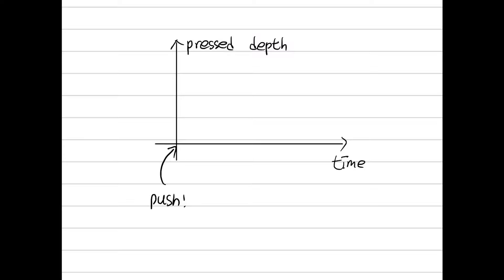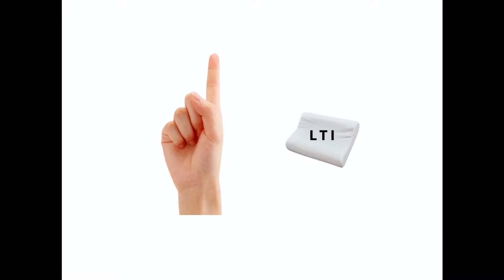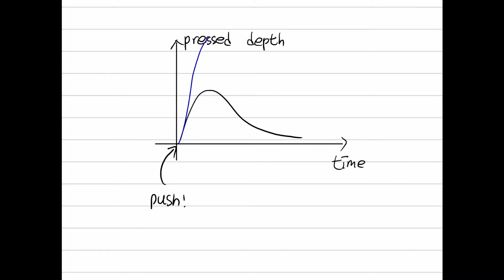Let me give you an intuitive example first. There is a pillow — an LTI pillow specially manufactured. When you press this pillow with your finger just one time, the pillow is pressed and recovers slowly; the recovering is time consuming. Let's plot the reaction of the pillow over time. The x-axis is time and the y-axis is pressed depth. If I push at time zero, the reaction may look like this. If I press with double force, the press depth will be double — because the pillow is a linear system.